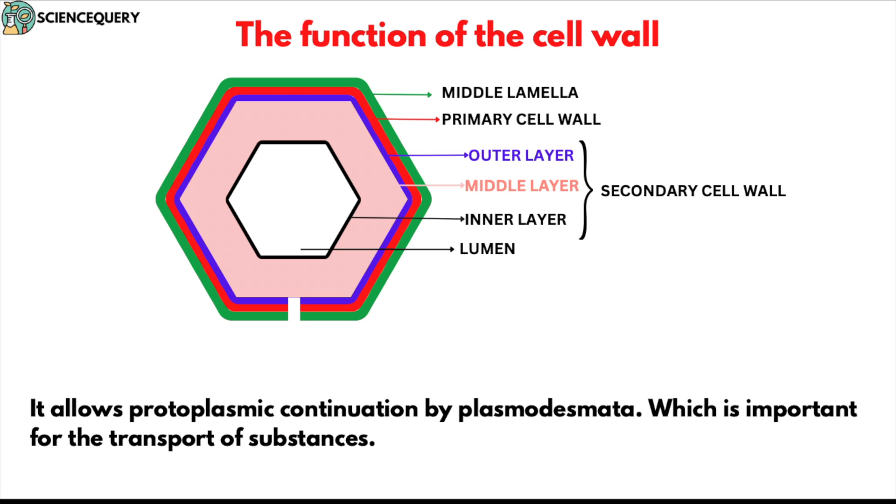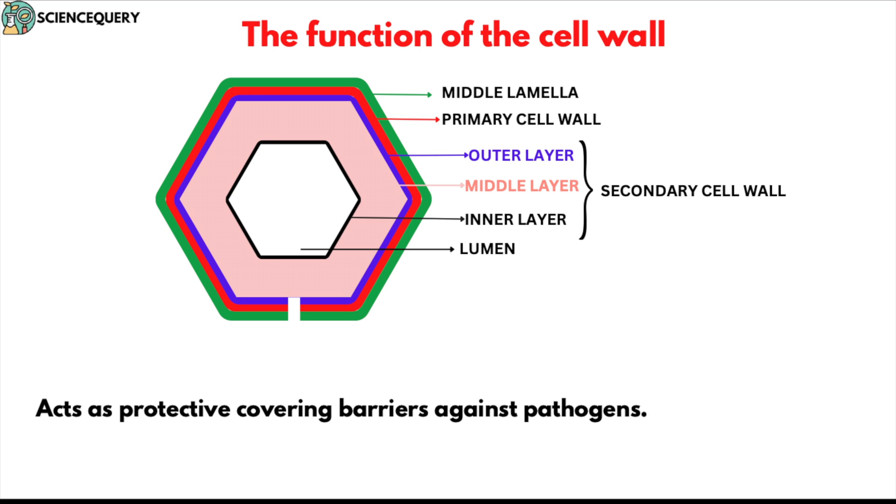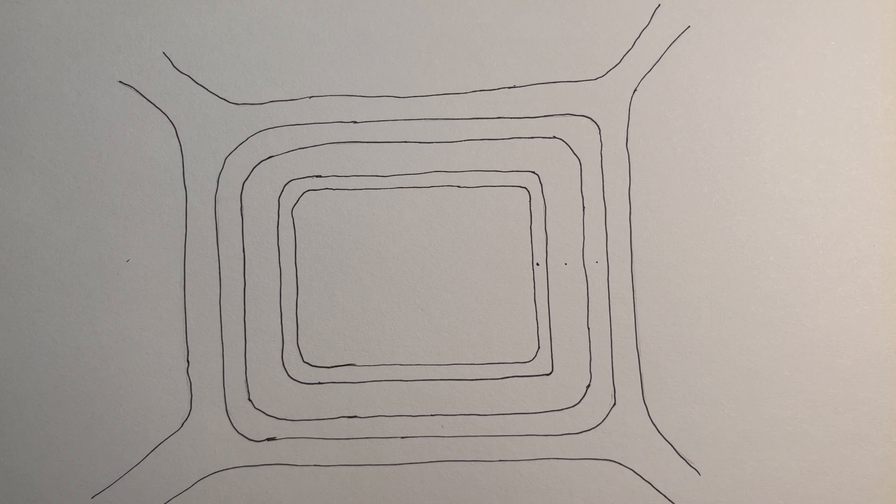It allows protoplasmic continuation by plasmodesmata and helps in transportation of substances from one cell to another. Cell wall also helps in preventing the osmotic bursting of the cell, helps in cell to cell adhesion, and prevents the entry of undesirable molecules. Thus the cell wall acts as a protective covering against the pathogen.